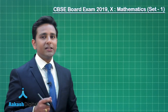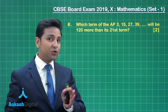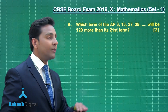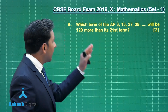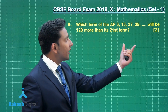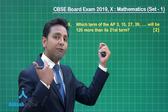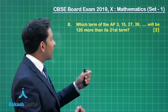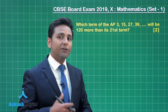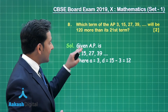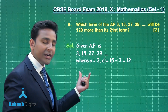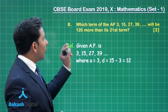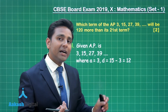Now let us solve question number 8. In this question you have a choice — you can solve either this part or its optional part. This question is from arithmetic progression and asks which term of the given AP will be 120 more than its 21st term. In this given arithmetic progression, the first term is 3 and the common difference is 12. Let us consider the nth term to be the term which is 120 more than its 21st term.